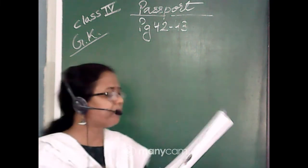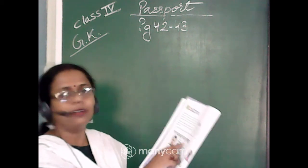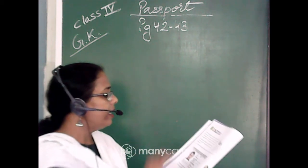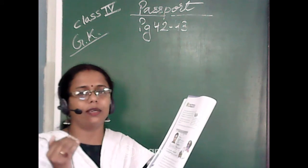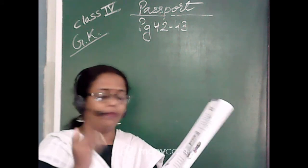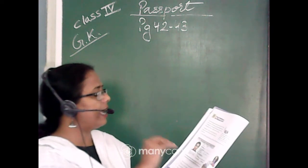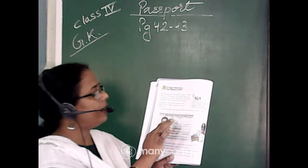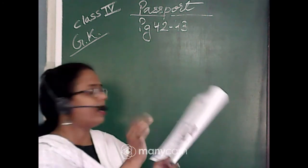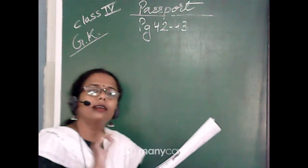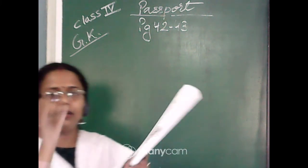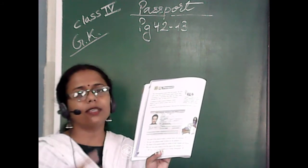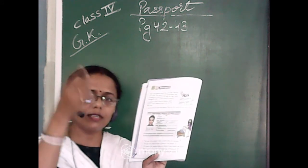Next comes country — as you know, it is India. Then comes passport number, which is printed on the passport. In the passport, your surname is written first — usually we call it the last name. So the surname is written first, and then your first name and middle name follow below it. The last name, that is the surname, always comes first in the passport.